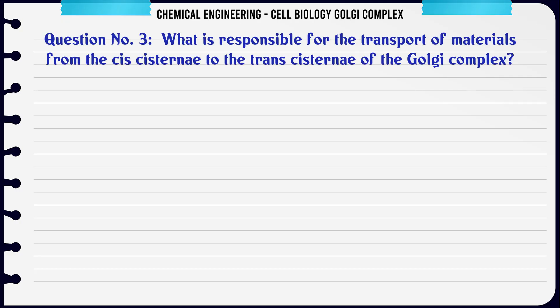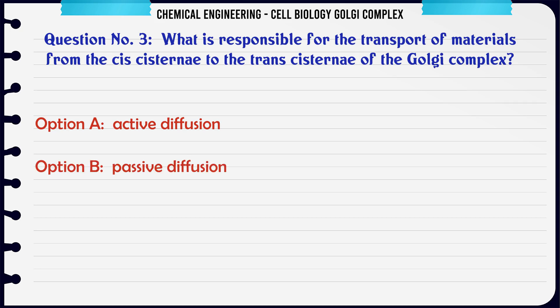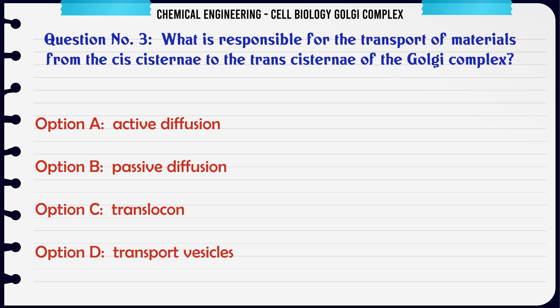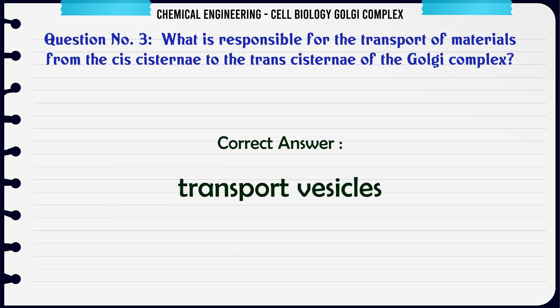What is responsible for the transport of materials from the cis cistern to the trans cistern of the Golgi complex? A) active diffusion, B) passive diffusion, C) translocon, D) transport vesicles. The correct answer is transport vesicles.